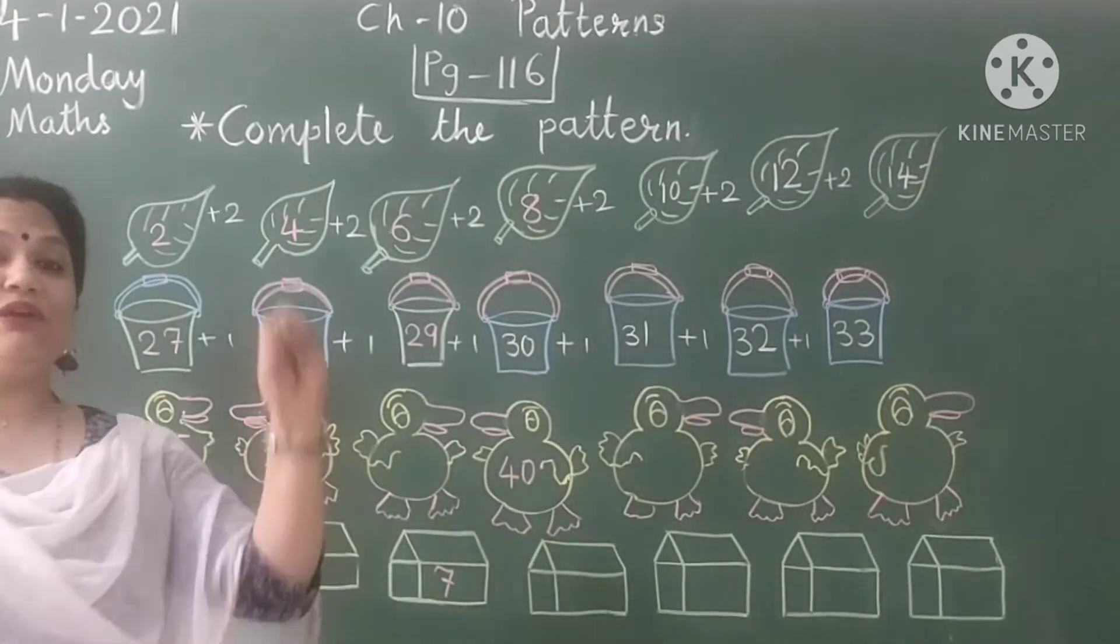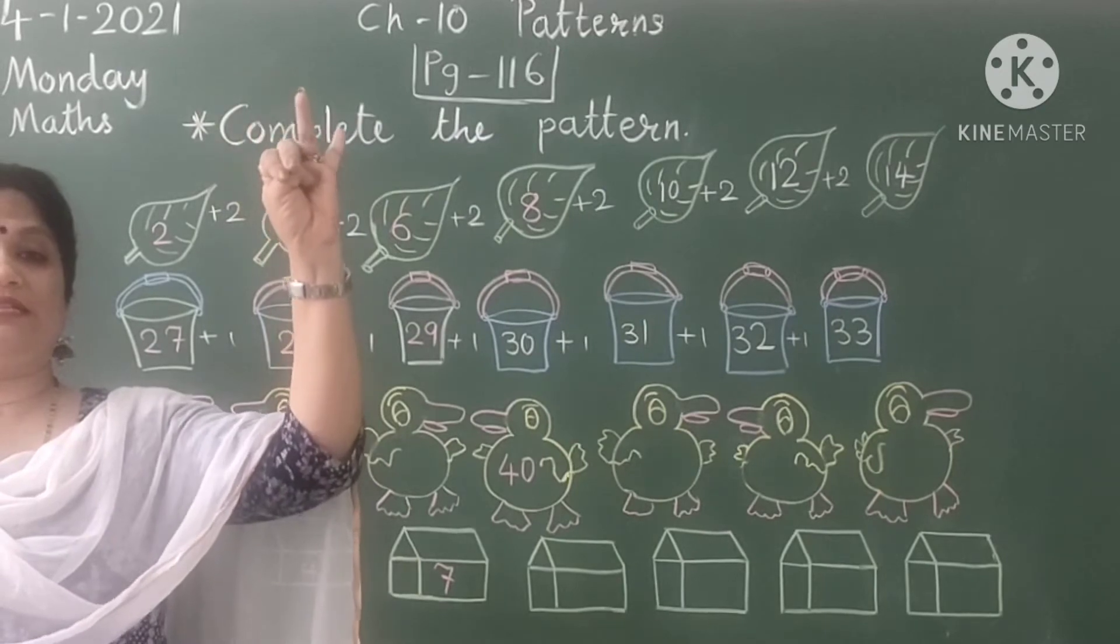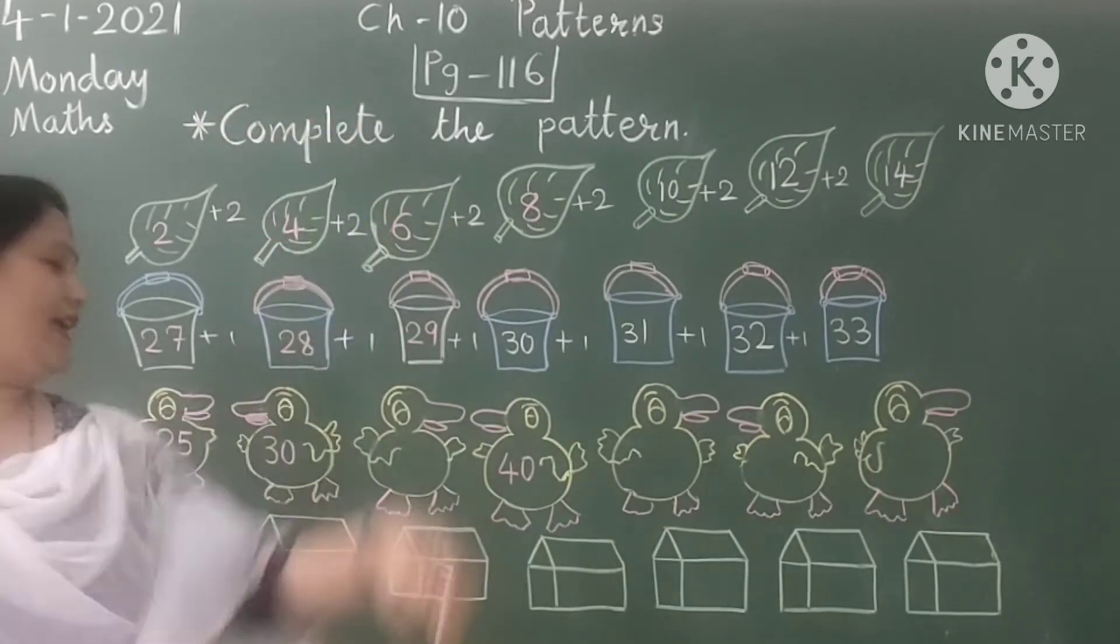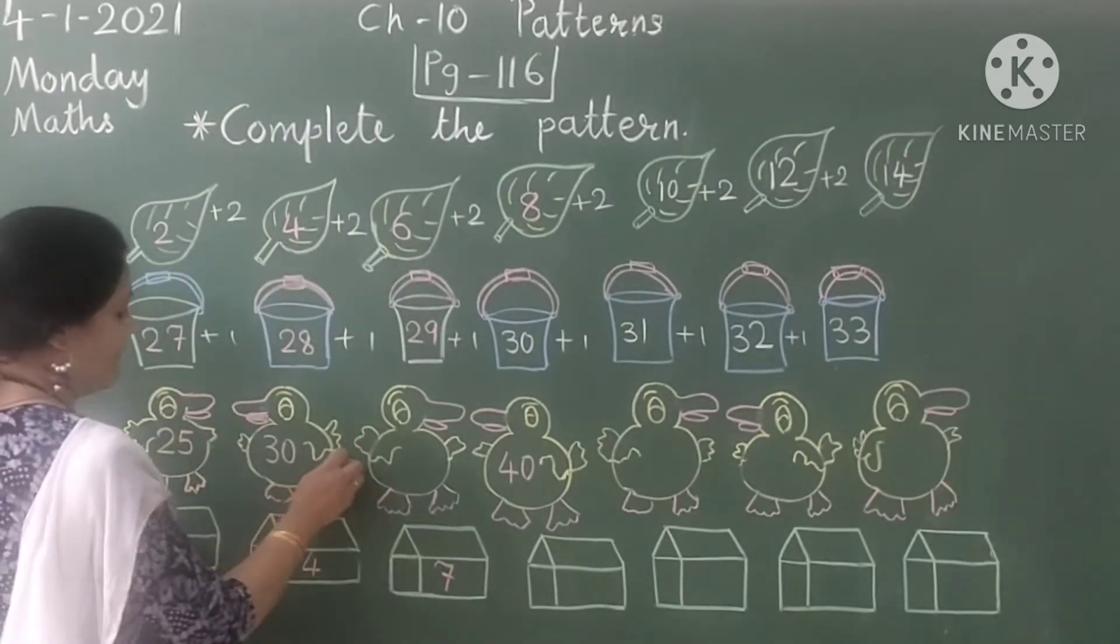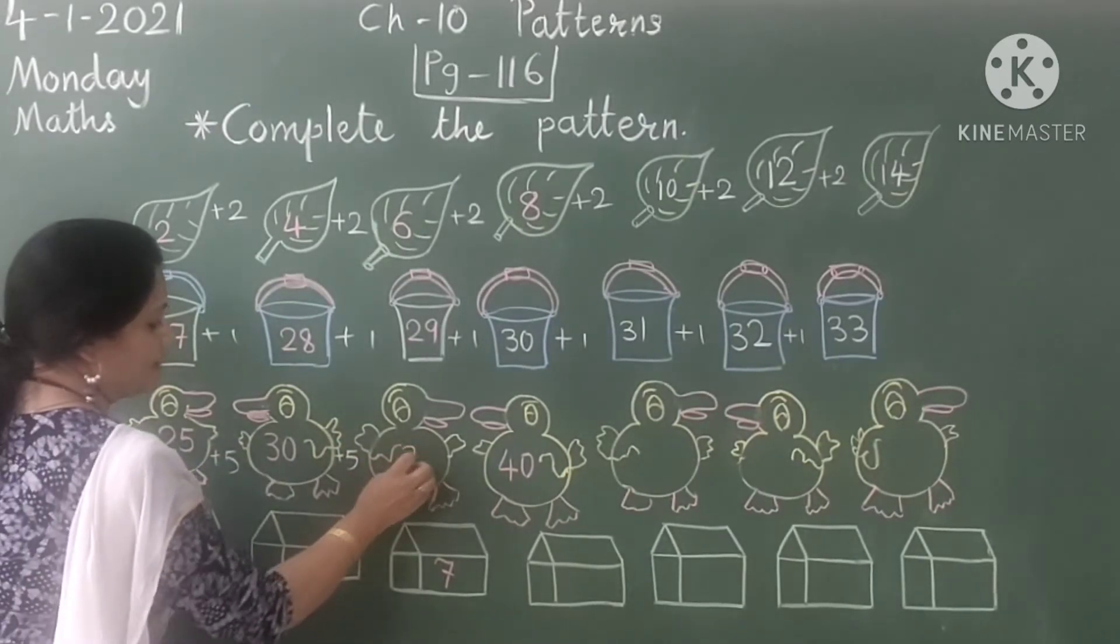So let's add 5 more number in 30. So 31, 32, 33, 34 and 35. So let's add 5 more numbers. So it will become 35.